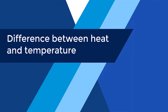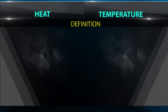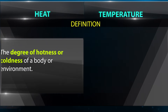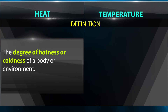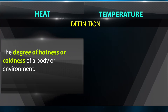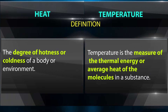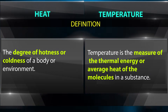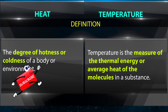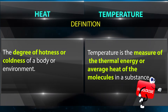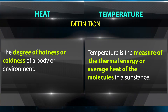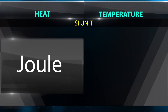Difference between heat and temperature. Definition of heat: the degree of hotness or coldness of a body or environment. Definition of temperature: temperature is the measure of the thermal energy or average heat of the molecules in a substance.